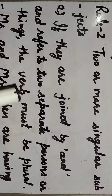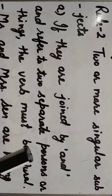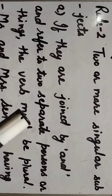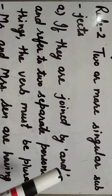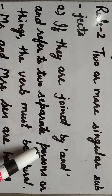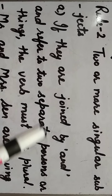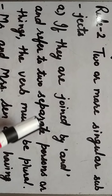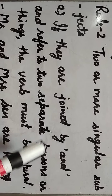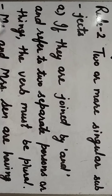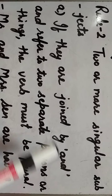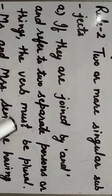Second rule is two or more singular subjects. दो या दो से ज़्यादा singular subjects हों और वो 'and' से जुड़े हों — इसके अलग-अलग parts हैं। Part A: If they are joined by 'and' and refer to two separate persons or things, the verb must be plural.